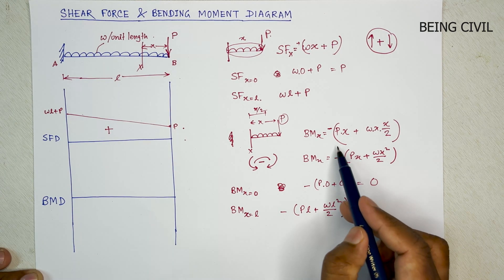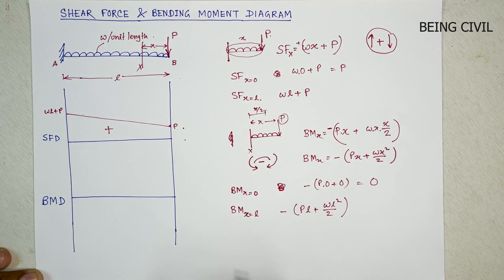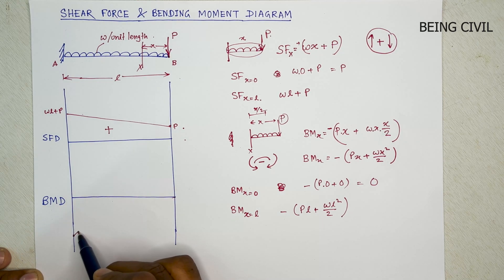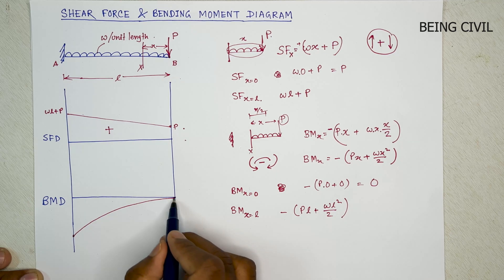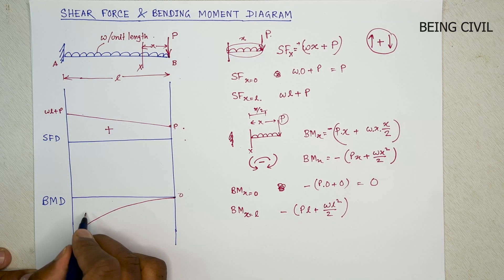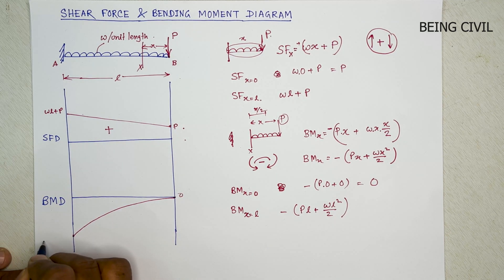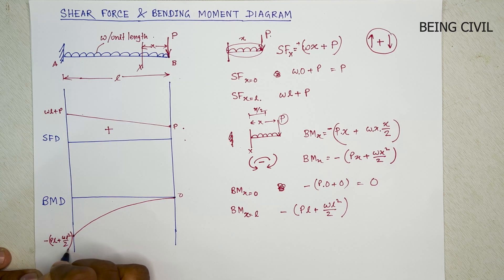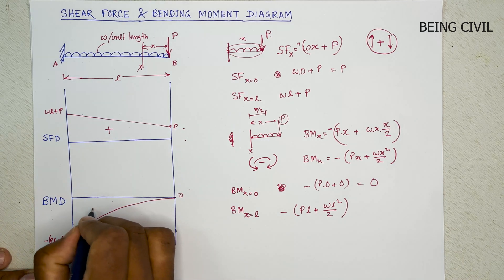And you see the equation varies with X squared. So it will start here at 0 and it will be a parabolic curve like this. So here is 0 and here minus PL plus WL squared by 2. It is a negative sign.